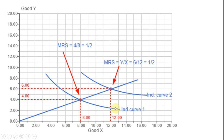Here's a graphical look at homothetic utility functions. Here's that Cobb-Douglas utility function where u equals x times y. We have a couple of indifference curves, evaluating those at y equals 4, x equals 8, and y equals 6, x equals 12. Drawing a straight line through the origin through those points, we see the marginal rate of substitution is one-half. Take any ray from the origin, and where that ray touches the indifference curves, the marginal rate of substitution will be unchanged.